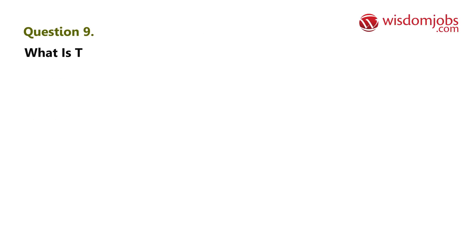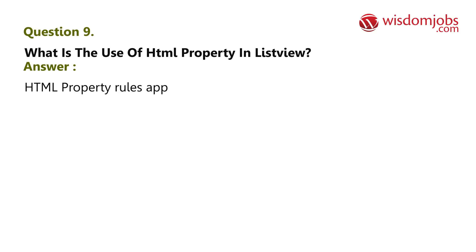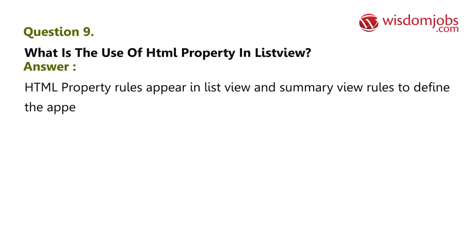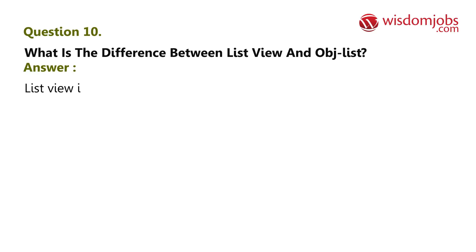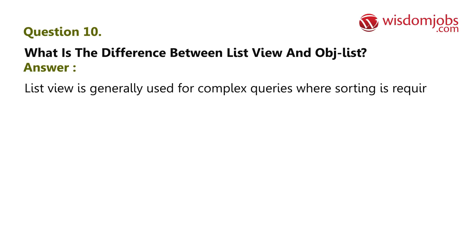Question 9: What is the use of an HTML property in list view? Answer: HTML property rules appear in list view and summary view rules to define the appearance of values in reports. Question 10: What is the difference between list view and obj-list? Answer: List view is generally used for complex queries where sorting is required, and we can also retrieve less information using paging.